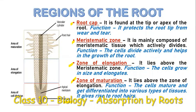The tip is generally made of the apical meristem, which is mainly the meristematic tissue. To protect the delicate cells of the meristematic zone, the root cap covers the tip of the root so that these delicate cells can be protected from wear and tear as the root grows and rubs against the soil particles.